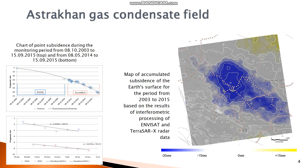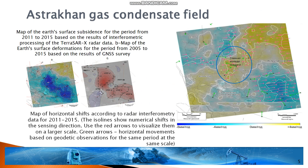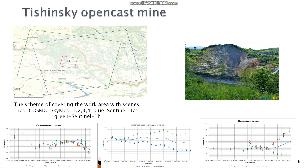We faced the problem of determining absolute motion vectors back in 2011–2015, when the results of Radar Interferometry did not quite coincide with the results of leveling. When we used data from multi-directional orbits of the Envisat and TerraSAR-X spacecraft, we explained the differences between the leveling, but we were not able to identify the absolute shift at that time.